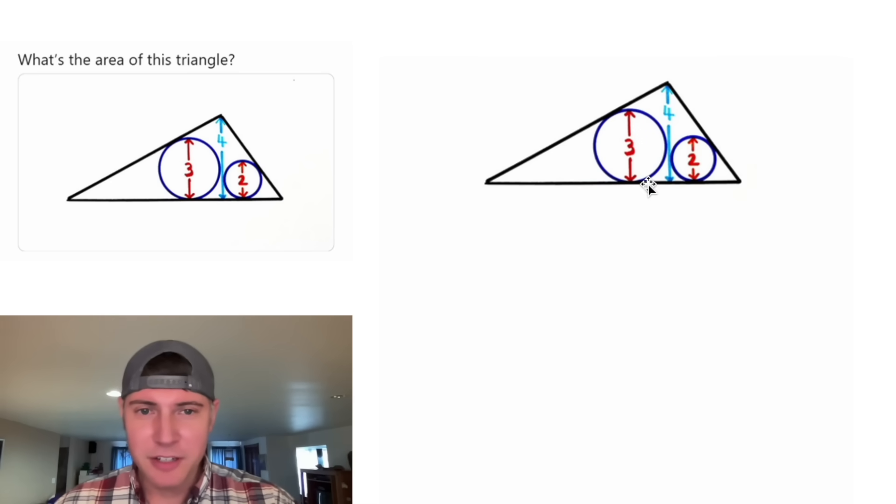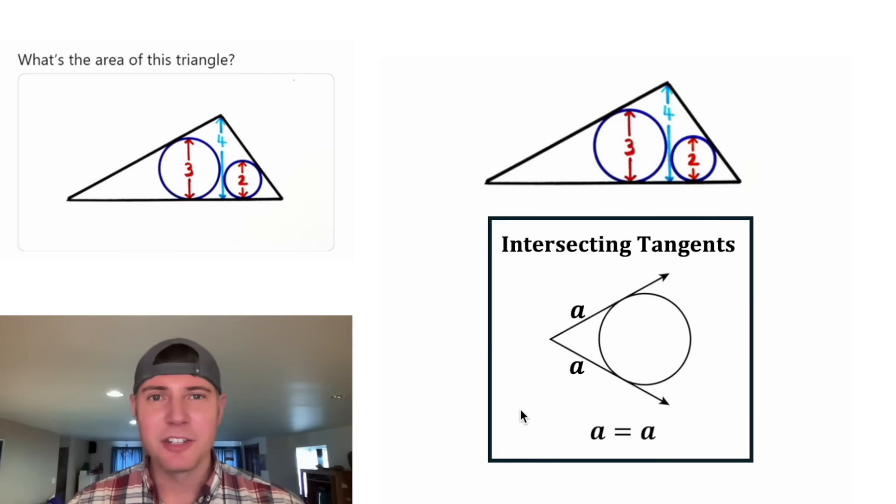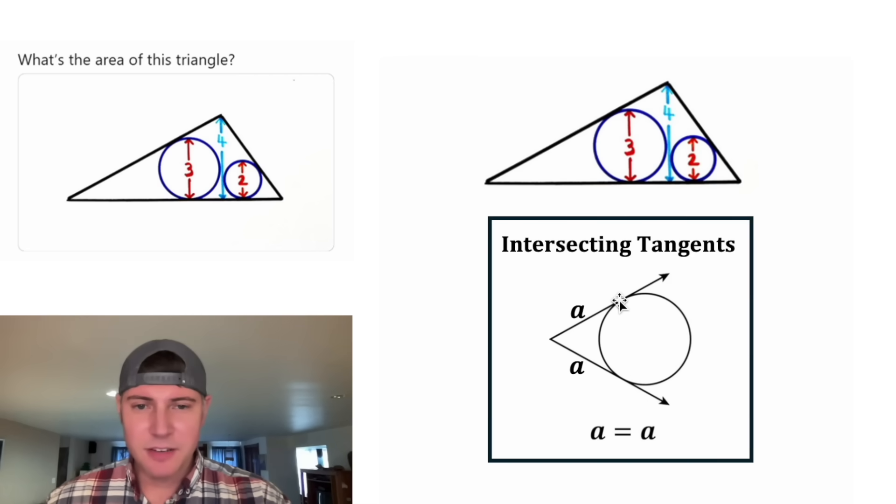There are a lot of intersecting tangent lines here. So let's use these notes about intersecting tangents. It says if two tangents of the same circle intersect, this distance will equal this distance. And if it wasn't obvious enough that both of these were labeled A, we're also told that A equals A. I think that's hilarious, such brilliant notes.